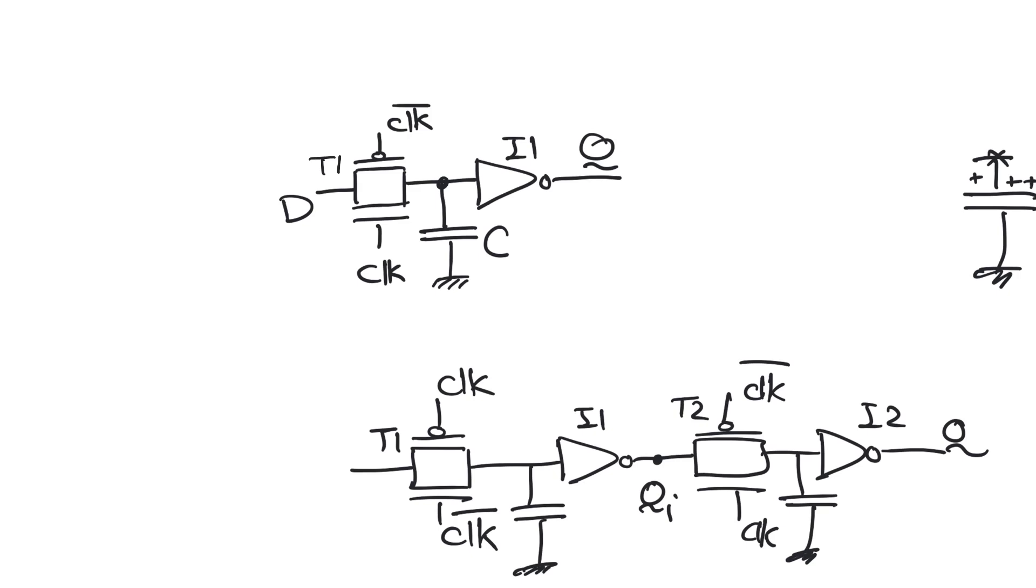So how is this a latch? When clock is equal to one, transmission gate T1 is transparent and allows D to become Q. In this case Q will become D bar but that's okay. Still Q is taking the value of D somehow.